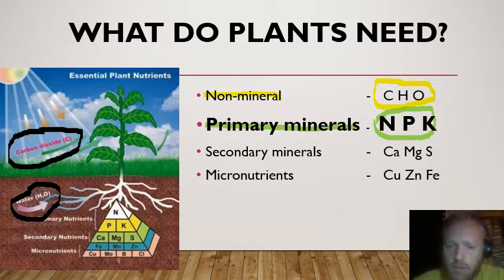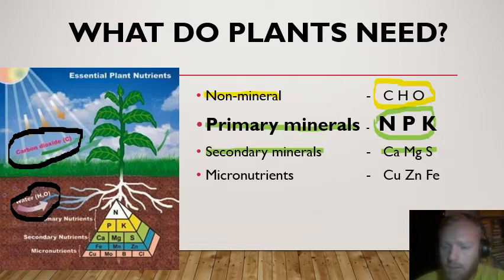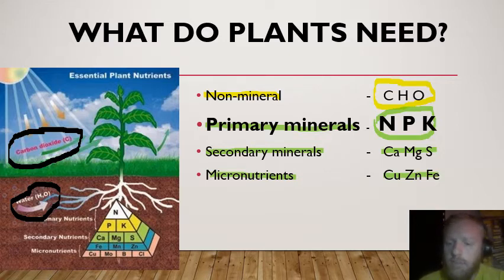The secondary minerals are also important to the plant — for example, calcium, magnesium, and sulfur — but they are not as vital as N, P, and K. The plant will need those, but it will probably not die without them. Then the micronutrients — there are about 10 or 15 of them; I've given you copper, zinc, and iron here — are also important to the plant, but the plant doesn't need as much of them as the others.